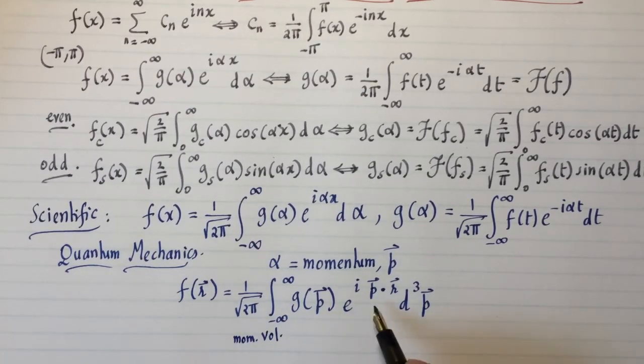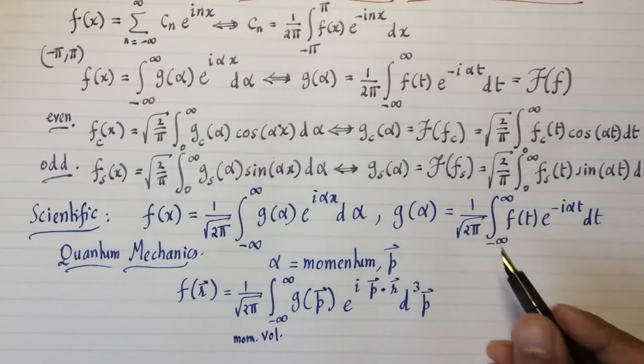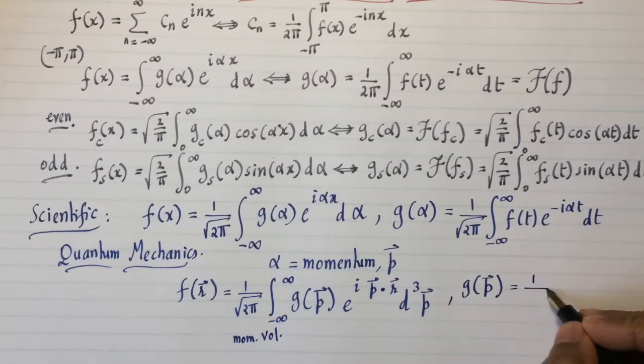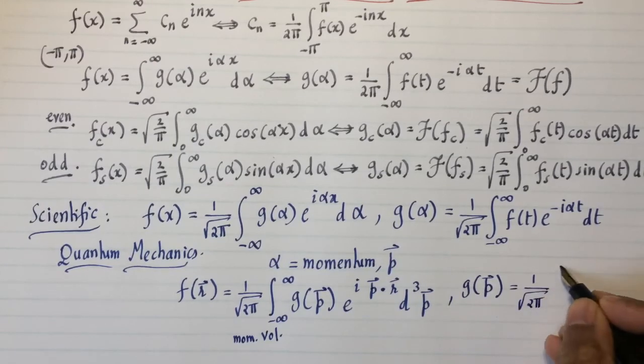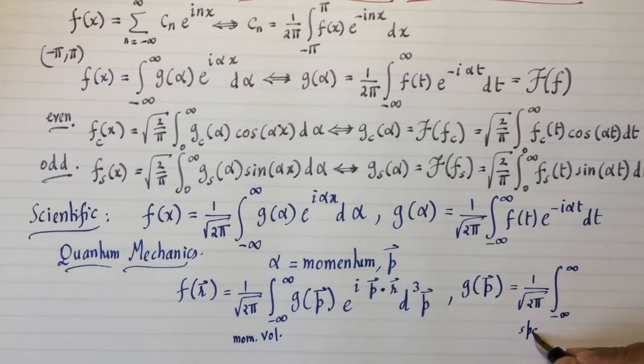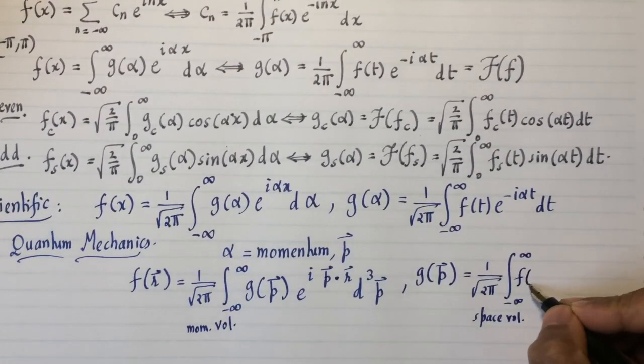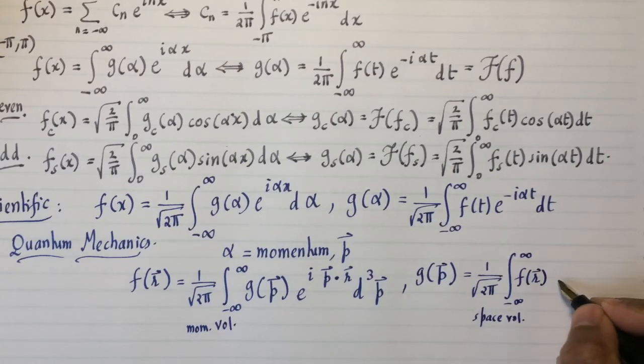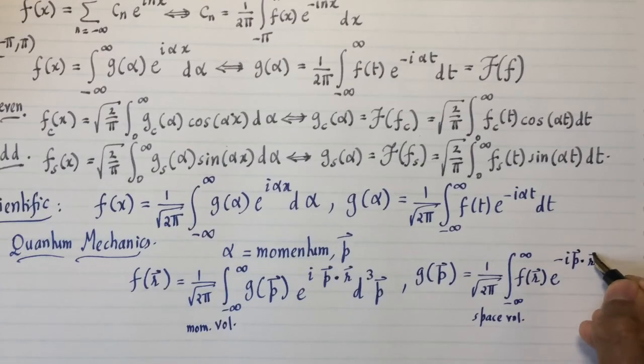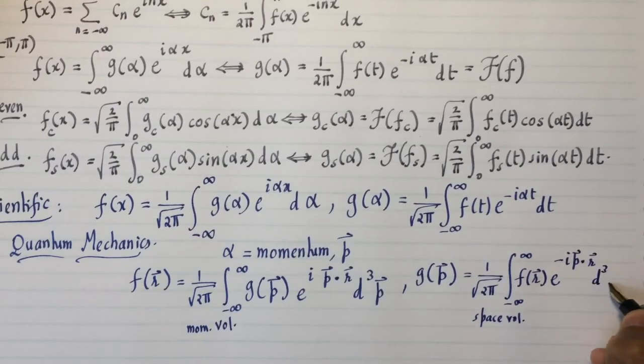And you can find g of p by inverting it just like that. So g of p would be the 1 over root 2 pi integral from minus infinity to infinity. And now this is the space volume of f of r, e to the negative i p dot r d cubed r.